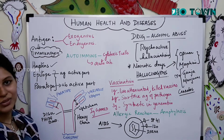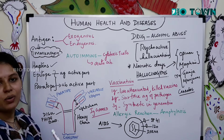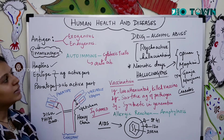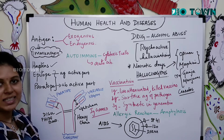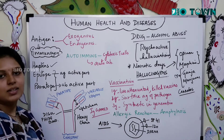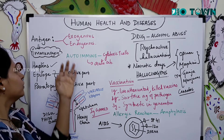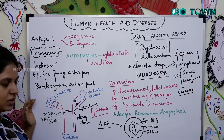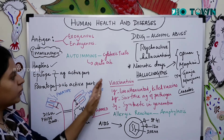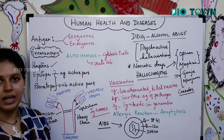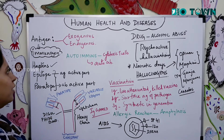Hello friends, we are almost going to end the chapter. This would be the last session of the chapter Human Health and Diseases, and yet we have all interesting stuff in this chapter especially towards the last part. We will be explaining about antigens, their types, the structure of antibody, vaccination, and additional information about drug abuse and trafficking.